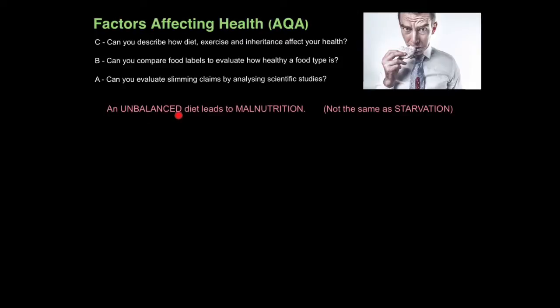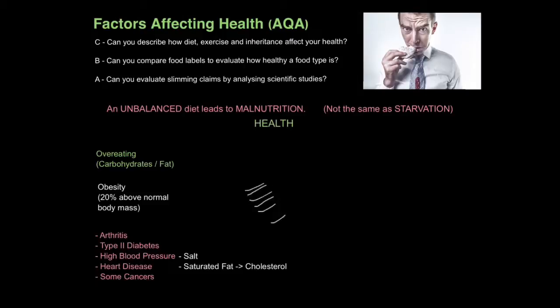When we have an unbalanced diet, it can lead to a condition called malnutrition, where we don't have enough of every type of nutrient. This is not the same as starvation, where we simply don't have enough food, but rather we are lacking in specific nutrients. You can be overweight, underweight, physically fit, or slim, and you can still suffer from malnutrition. It's an incredibly common problem.